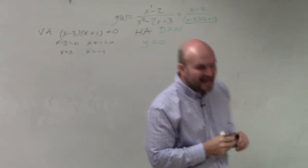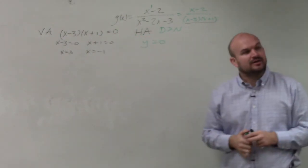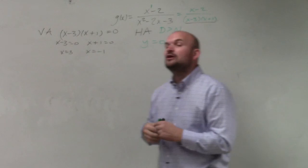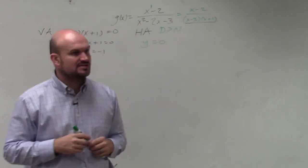Always. Always. Whenever the degree in the denominator is larger than the degree in the numerator, your horizontal asymptote is y equals zero.